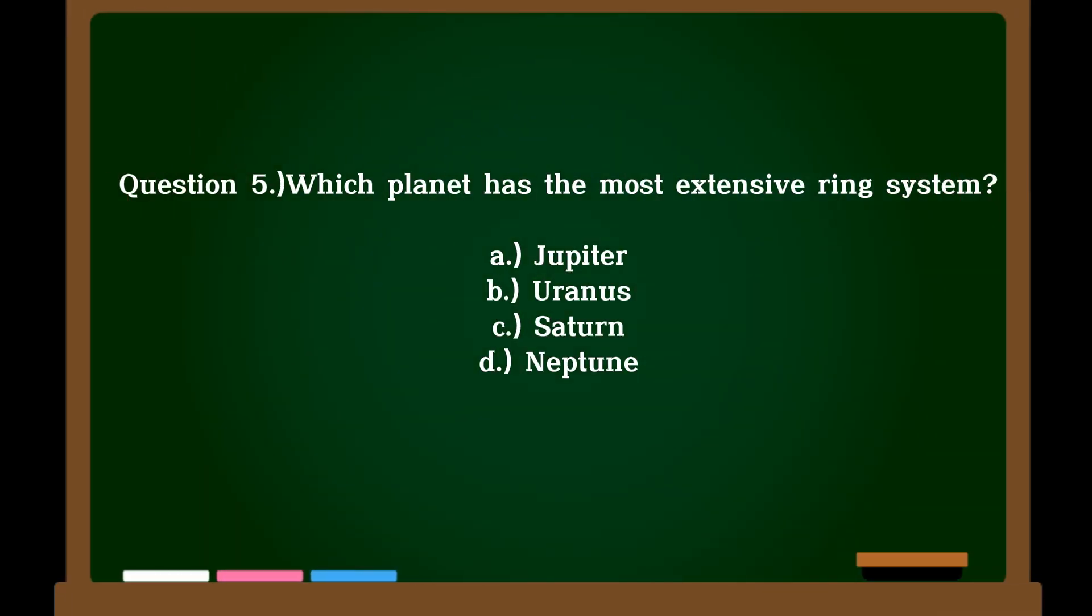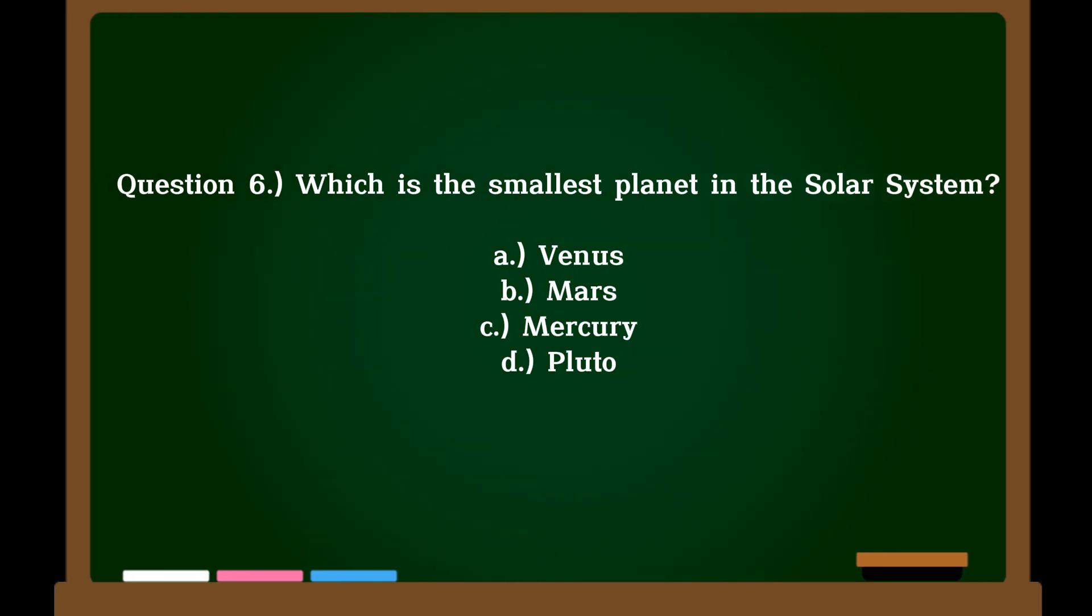Question 5. Which planet has the most extensive ring system? A. Jupiter, B. Uranus, C. Saturn, D. Neptune. Correct answer: C. Saturn.